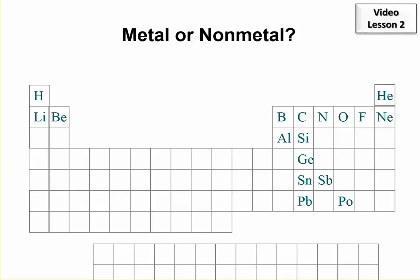One thing we'll need to do very often is to determine if an element is a metal or not. So you need to know where they are on the periodic table.